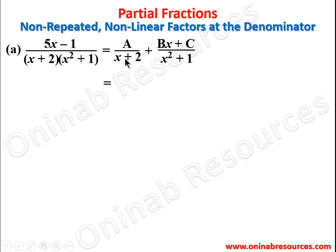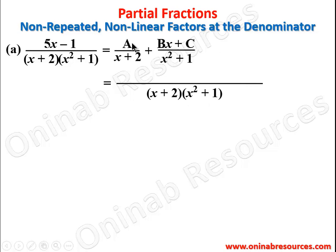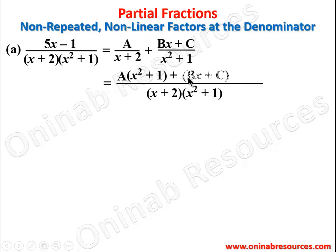The LCM is (x + 2)(x² + 1). Dividing by (x + 2) we are left with (x² + 1), multiplied by A, giving A(x² + 1). Then dividing the LCM by (x² + 1) we are left with (x + 2), which multiplies the numerator (Bx + C), giving (Bx + C)(x + 2).